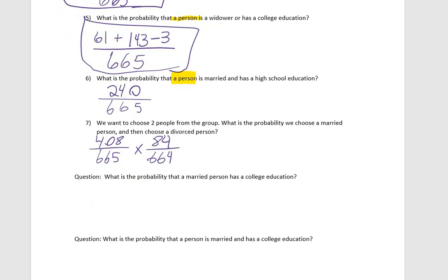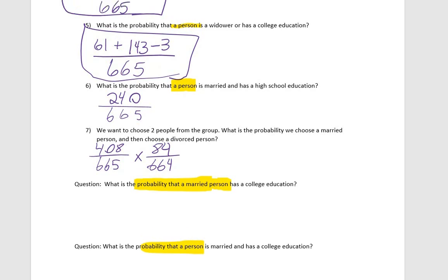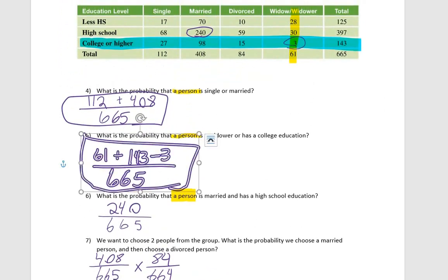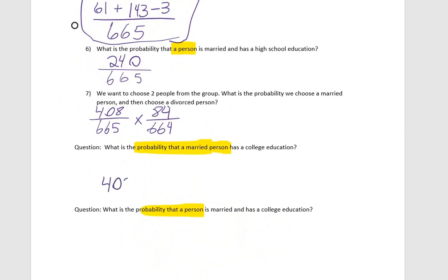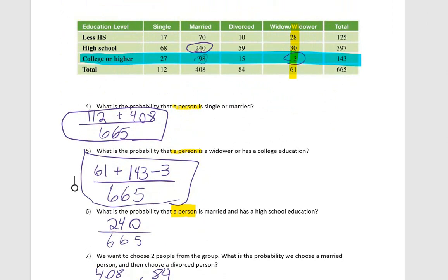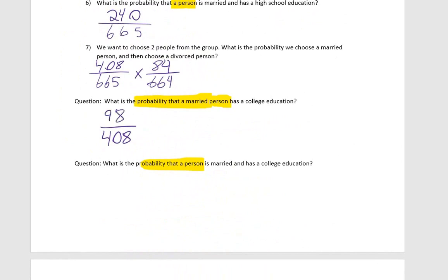These last two require care. What is the probability that a married person has a college education, versus what is the probability that a person is married and has a college education? For the first, we're only picking from the 408 married people — out of those 408, we have 98 with a college education. For the second, we use all 665 as the total pool, with 98 people fitting both criteria.